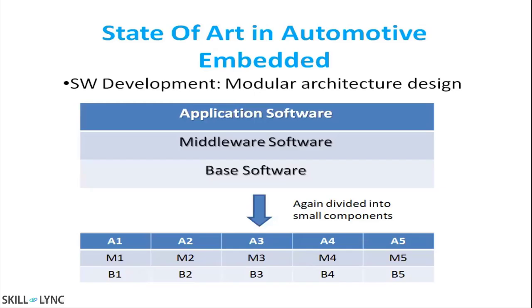Coming to software development, in the industry these days software development is on top for automotive embedded, because hardware can be reused. On the same hardware you can put different software with small modifications, and that can be applied to many customers. So it's a very important part.